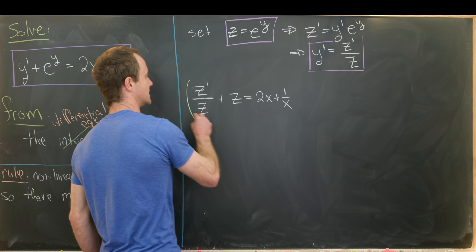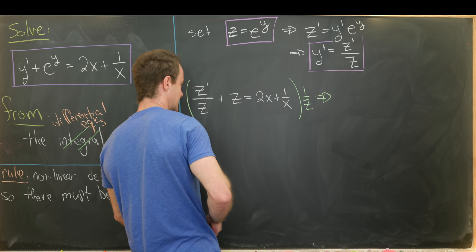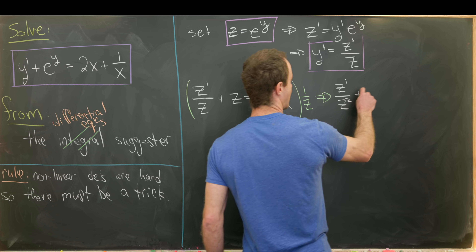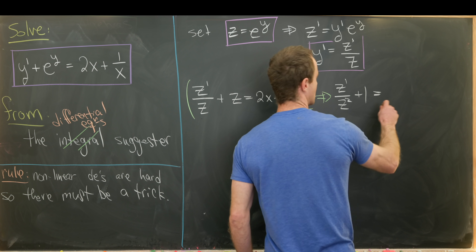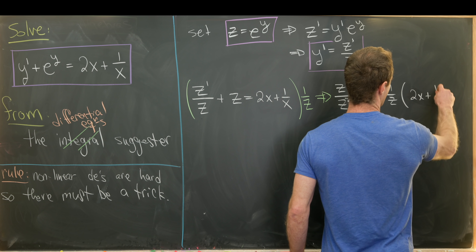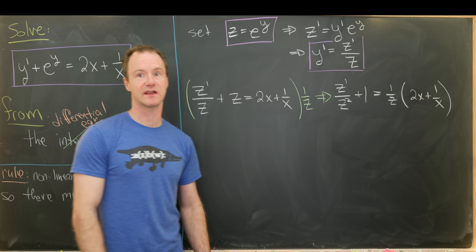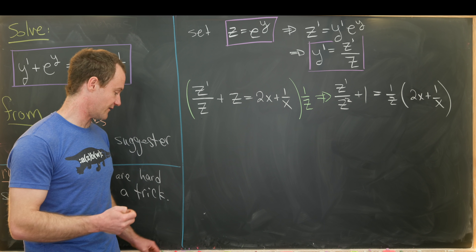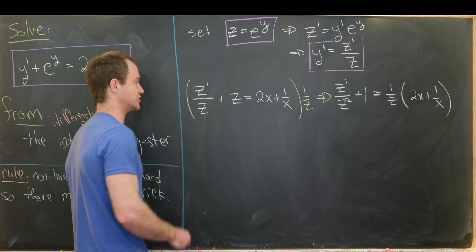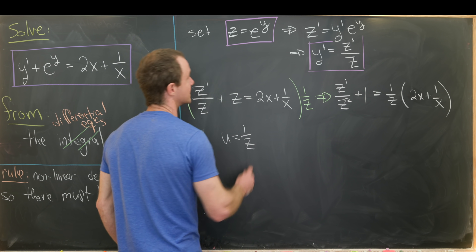Let's multiply everything by 1 over z. That gives us z prime over z squared plus 1 equals 1 over z times (2x plus 1 over x). This term z prime over z squared looks like the derivative of a reciprocal function via the chain rule, which gives motivation for our next change of variables: set u equal to 1 over z.